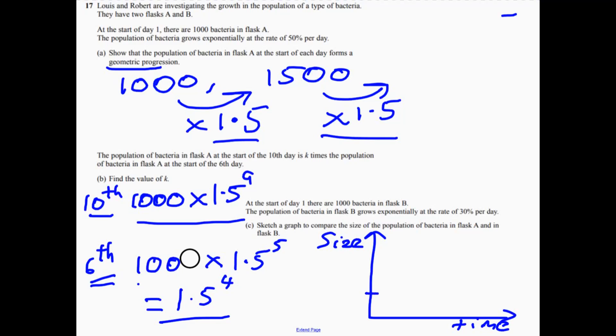Now, we know they both start from 1,000 in terms of our population. So flask A increases by 50% each day. So it's been multiplied by 1.5. So it's going to go up something like that.